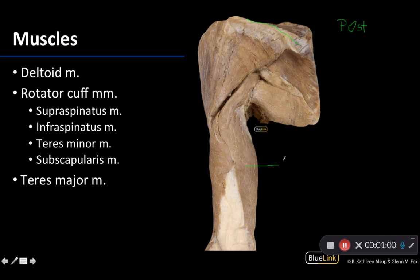Over here, I can see the triceps brachii. Triceps brachii is going to be that expanse of three heads in the posterior portion of the arm, and that's always going to be posterior. So since you have that scapular spine and your triceps, you know you're looking at a posterior view.